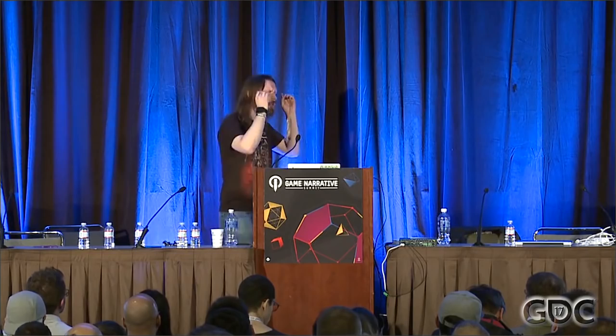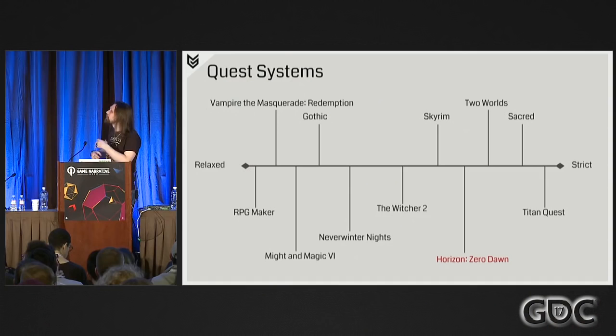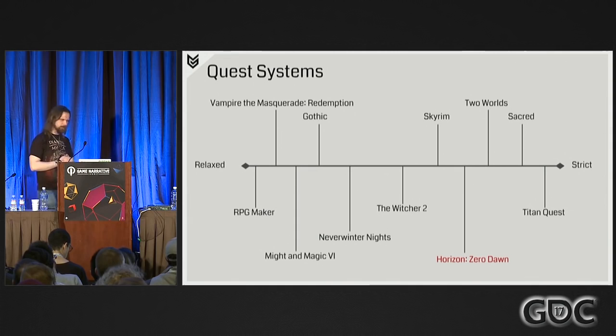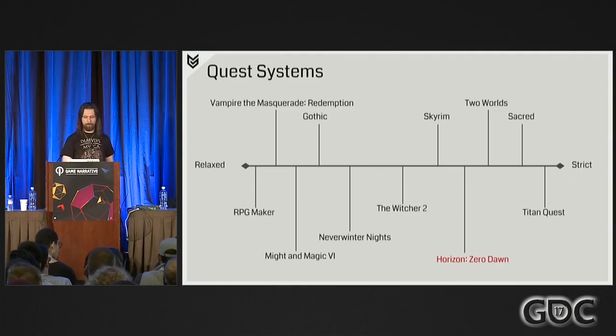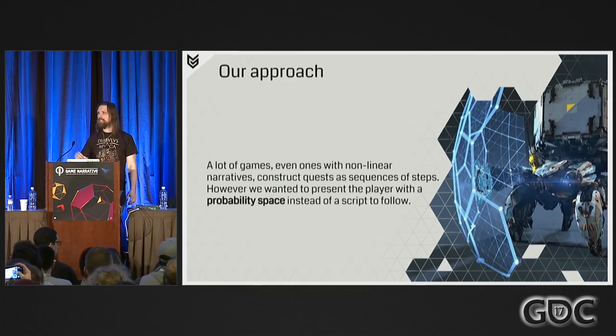After defining our requirements and exploring possible approaches, we decided our system would live more on the stricter side of that scale. That makes sense — we need a lot of content, and more rigid structures are good for quick development and improve communication and cooperation between all teams. We knew what we wanted. Now we needed to detail our approach. We noticed that many games, even those featuring magnificent nonlinear narrative, still construct quests as sequences of steps.